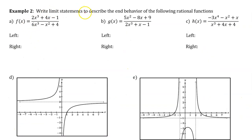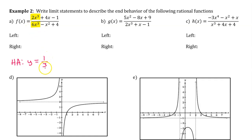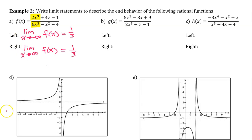Example 2: write limit statements to describe the end behavior of the following rational functions. For part a, the degree of the numerator and denominator are the same. At the extremes, only those terms matter — the x to the third power cancels from numerator and denominator, leaving 2 over 6, which simplifies to 1/3. So we have a horizontal asymptote at y equals 1/3. The left end behavior equals 1/3 and the right end behavior equals 1/3.